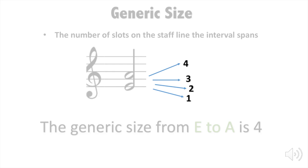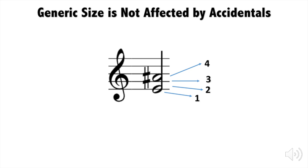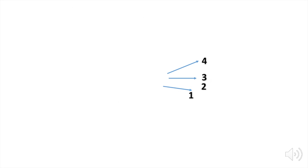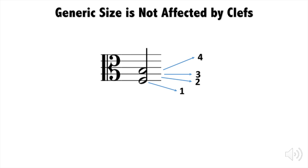Now, generic size is not affected by any accidentals. This means that even if I add some crazy accidentals here and there, the generic size is still 4. In fact, you don't even need a clef to know the generic size. Let's say I change the treble clef to something you have never seen before. The generic size would still be 4.